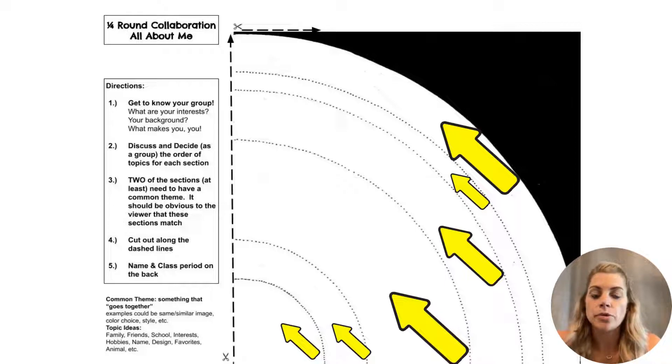So here is the worksheet that you all are going to be receiving. You can see here that it is one quarter of a circle. So when we put them all together, it will make a full circle. That's why we call it a quarter round.